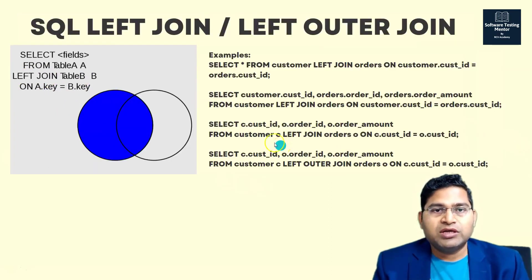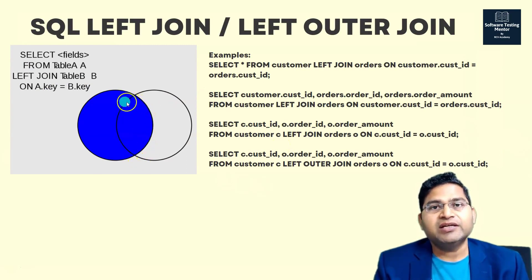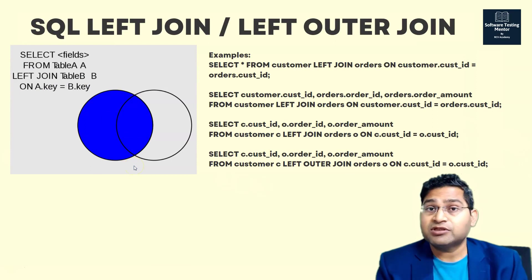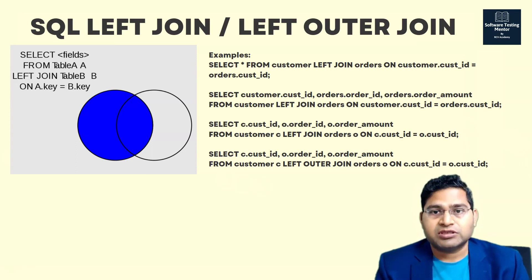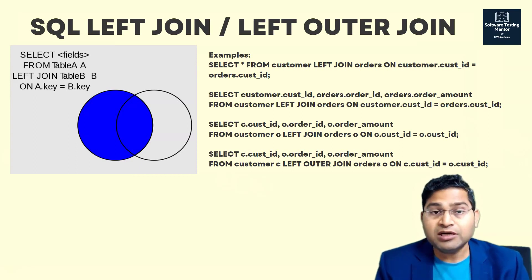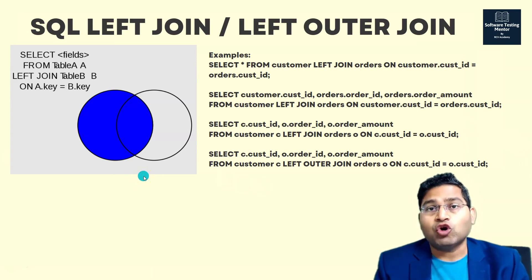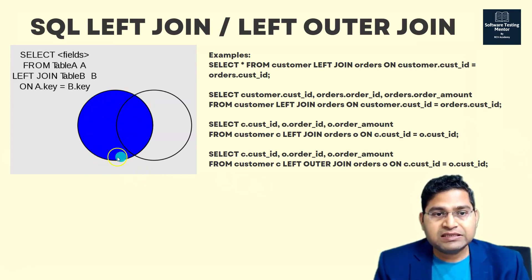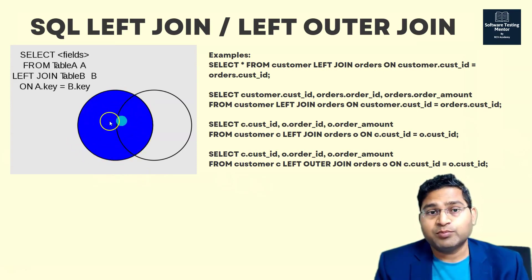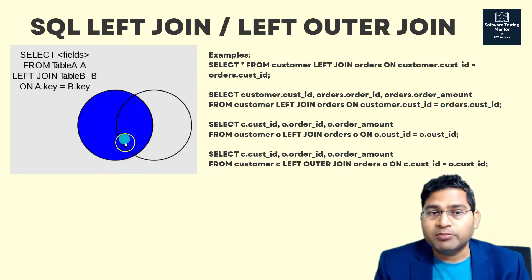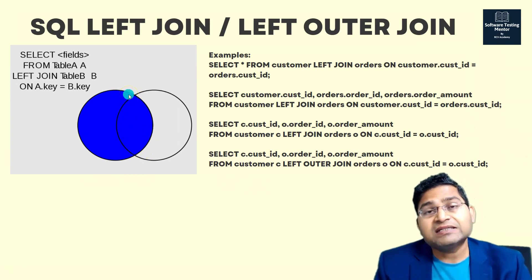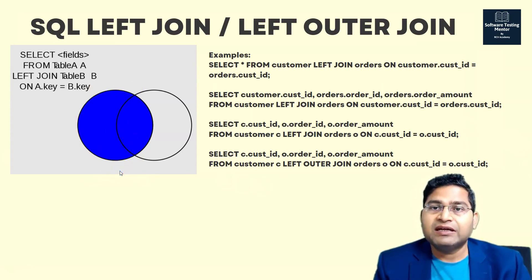Now what left join will do is it will get me the inner join or the common data in both the tables first, and then anything that is left out in the left table of the left join clause. I'll explain that with an example, so do not worry if you are not getting it at the moment. It will first give me all the common records, as you can see the highlighted portion covers the common records. So these common records intersect in both the tables, and then anything that is remaining is also included in the result set when you say left outer join.